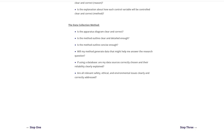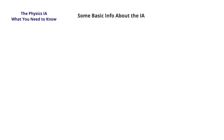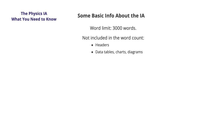All six steps in the guide have the same structure. Now that you know what the IA guide is about, we'll finish with some basic but important information about the IA. An important one to start with is the 3000 word limit. Keep in mind that headers, data tables, charts and diagrams, calculations and formulae, references and citations, and the bibliography are not included in the word count.